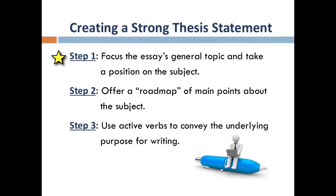Step one tells us to focus the essay's general topic and take a position on the subject. Step two tells us to offer a road map of the main points about the subject. And step three tells us to use active verbs to convey the underlying purpose for writing.